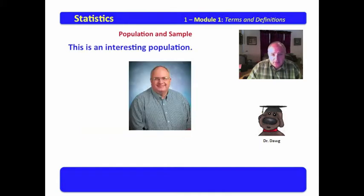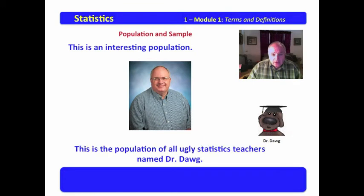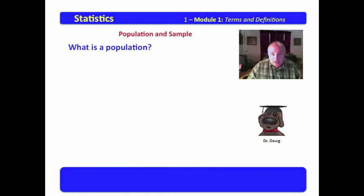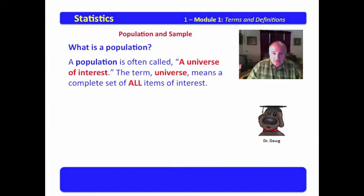This is an interesting population. I want you to notice the close set eyes, the balding head, the smirk on the face. This is the population of all ugly statistics teachers named Dr. Dog. What is a population? A population is often called a universe of interest. And the term universe means a complete set of all items of interest.